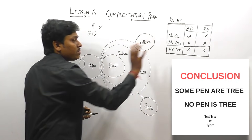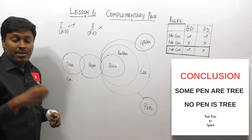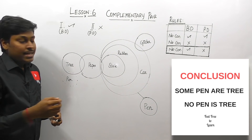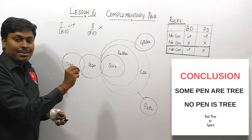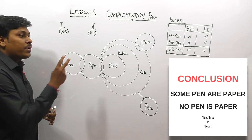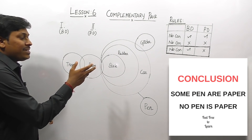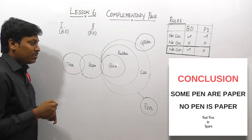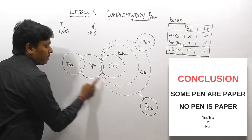Since the 'No' conclusion satisfies rule number three — true in basic diagram, false in possible diagram — we can directly say the answer is 'either one or two follows'. I am not looking at conclusion one at all; my only target is the 'No' conclusion. Only if it satisfies the third rule should you say 'either or'. Question number two: conclusion one is 'Some pen or paper' and conclusion two is 'No pen is paper'.